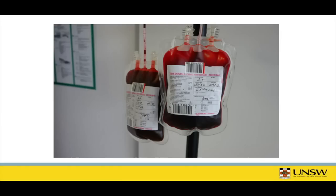Blood donations are usually separated into plasma and red cells. How much is normally donated? 500 millilitres is the standard amount, and each of these bags contains 500 mils. How much blood does a healthy person have? About five litres. So we're taking 10% in a blood donation.